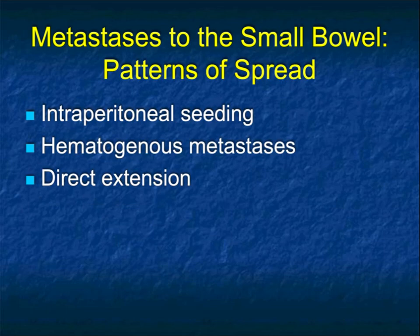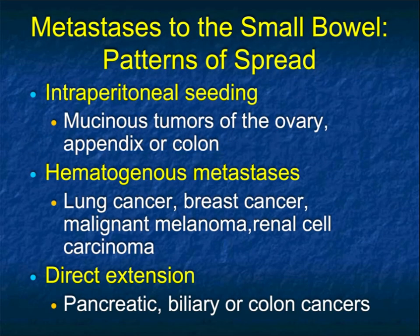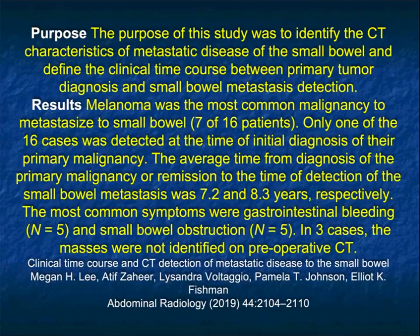There are three methods of spread to cover. Intraperitoneal seeding includes things like ovarian cancer or mucinous tumors of the appendix or colon — ovarian cancer is the poster child. For hematogenous METs, think lung cancer, breast, melanoma, and renal cell. For direct extension, it's typically pancreatic cancer — think pancreatic cancer involving the duodenum, the second portion with a head tumor, or the area by the ligament of Treitz where there's a tumor of the distal body or tail.